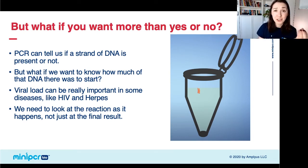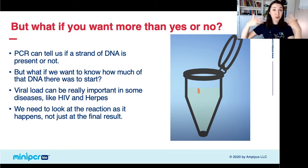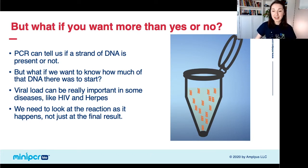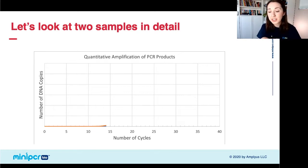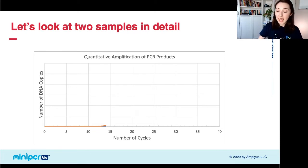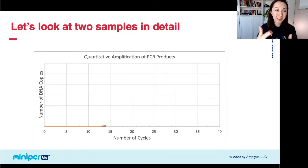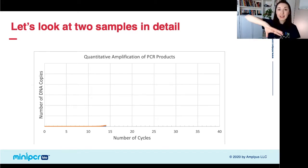PCR works exponentially. Every cycle of PCR, one piece of DNA turns into two, then two into four, then four into eight. So you start with just one piece, then two, then four, then eight — you get this exponential amplification of DNA in your sample tube. Looking at these curves: on the x-axis we have PCR cycles, and on the y-axis, number of DNA copies. Because products amplify exponentially, at the beginning they grow very slowly, but then you get this exponential growth.